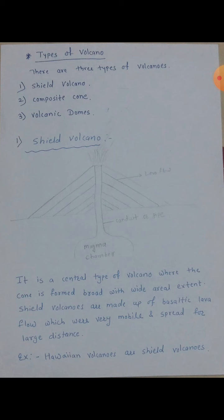Shield volcanoes are made up of basaltic lava flow. Basaltic lava flow manje kai? Khi jachamadhe calcic plagioclase aste — it is highly enriched in calcic plagioclase. Aani tachyamadhe minerals kut leya aste: olivine ahe, quartz ahe, mica ahe. So it is a basaltic lava flow which is very mobile — mobile means movable. Ekka tika naun dusra tika ni move hoto aste. And it spreads for a long or large distance. Jokai magma ahe, to surface var aala, to mobile aste — basaltic lava flow aste — aani long distance var spread zhalela aste.